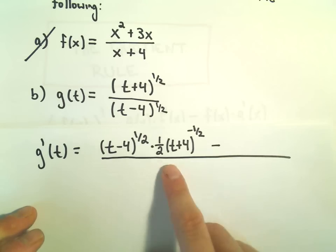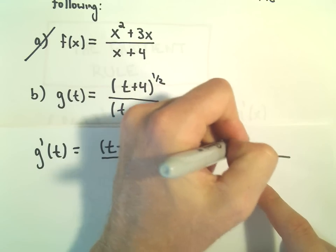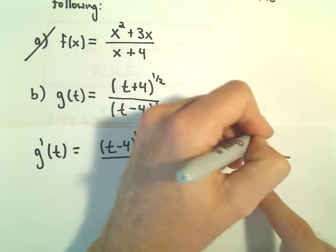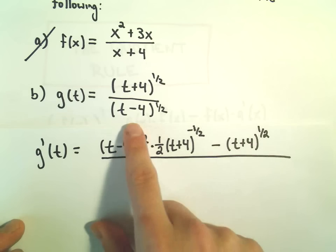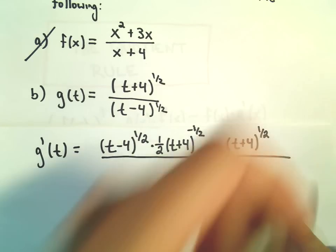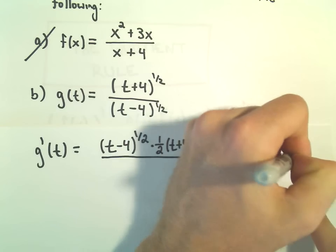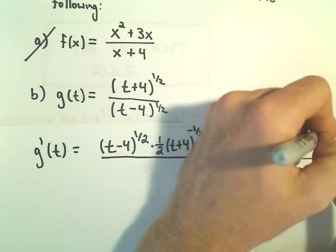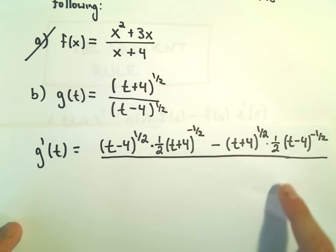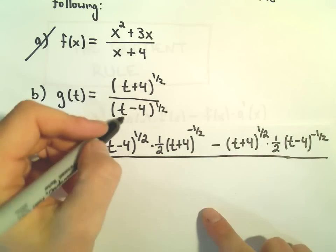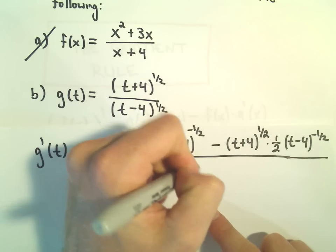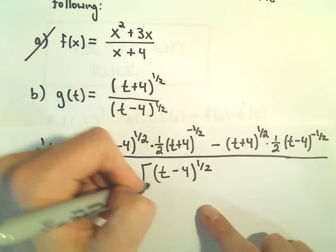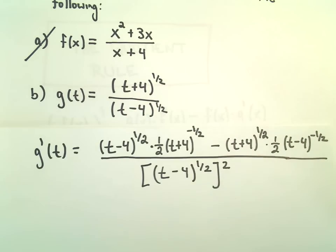Then minus, we'll just leave the top part alone, the thing that we took the derivative of originally. And if we do the derivative of the denominator, the 1 half will come out front. We'll get our t minus 4 to the negative 1 half. And then we'll take the denominator and square that.